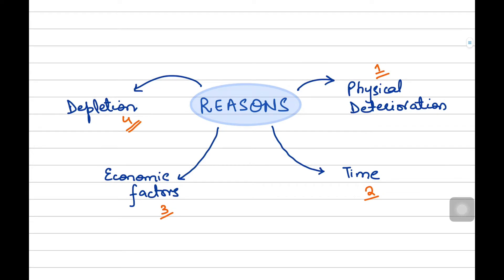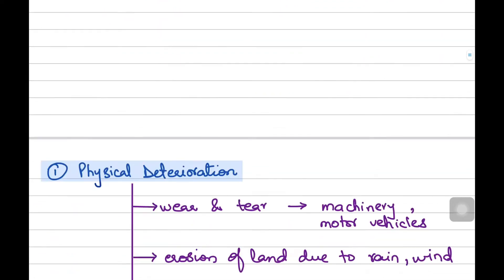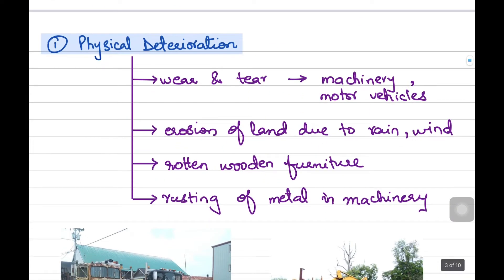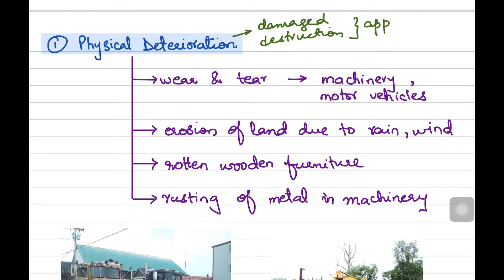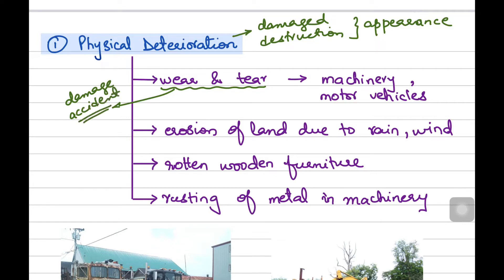Now, let us understand these reasons one by one so that you get a clear idea of what actually comes under each reason. The first one is the physical deterioration of the non-current asset. Under physical deterioration, we include all those factors that lead towards damage or destruction of your non-current asset — that is, the physical appearance of your non-current asset. Your asset can physically wear and tear. For instance, if there is damage in your non-current asset or there is some accident in the premises, that can change the condition of your non-current asset.